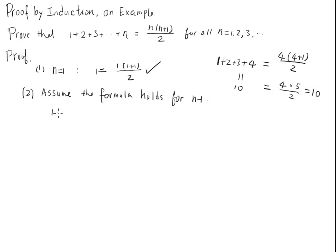What it means is that if we add 1 plus 2 plus 3 plus n minus 1, this is going to be equal to n minus 1 times n minus 1 plus 1, which is n, over 2. So we are going to assume this is our inductive assumption.